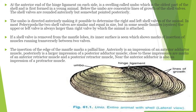Here we can see this diagram. The shell shows lines of growth and hinge ligament present. We can determine the age of growth from these shells. The uppermost portion is the umbo. We can decide the right, left, upper, and dorsal position from the umbo.